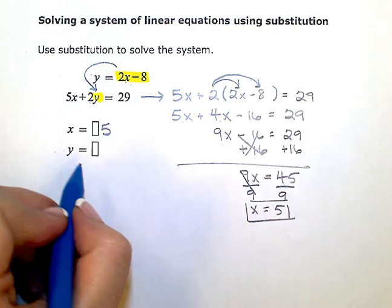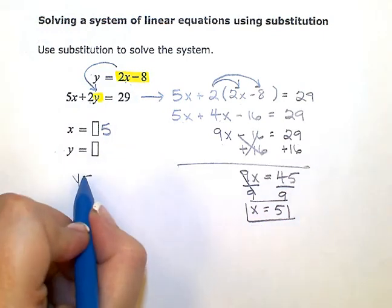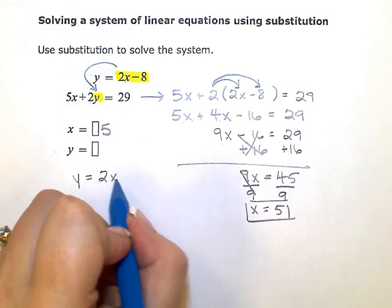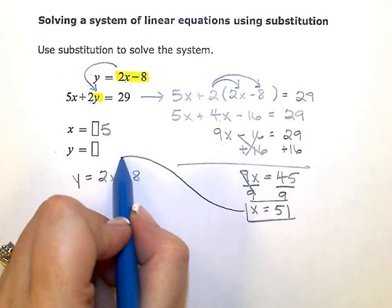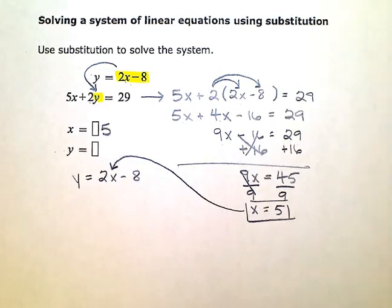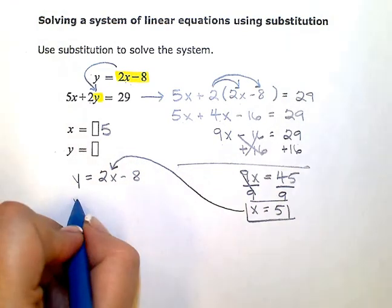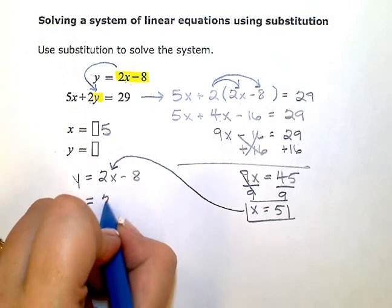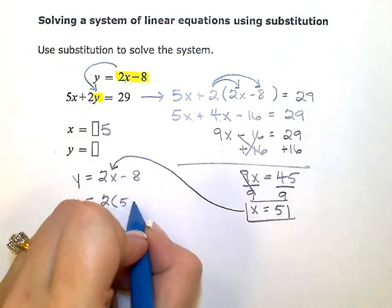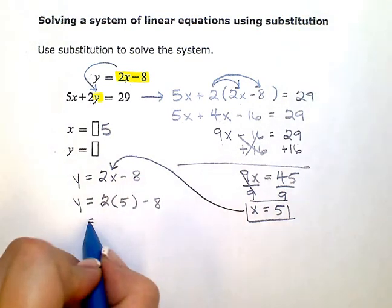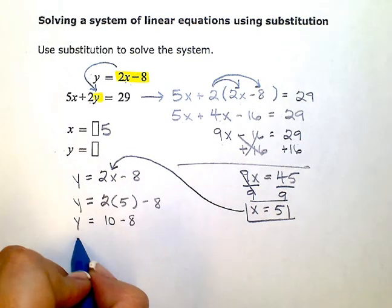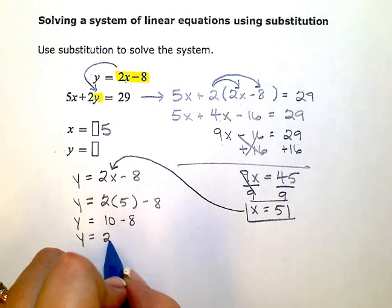So to get my y value, I'm going to take this number, the 5 now, and replace the x. So y equals 2 times 5 minus 8, which is 10 minus 8, and y is equal to 2.